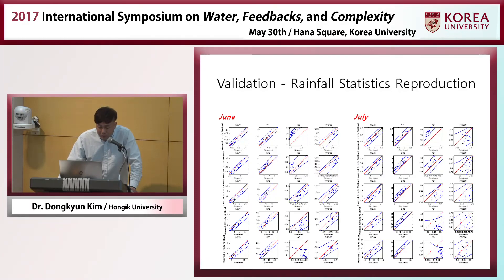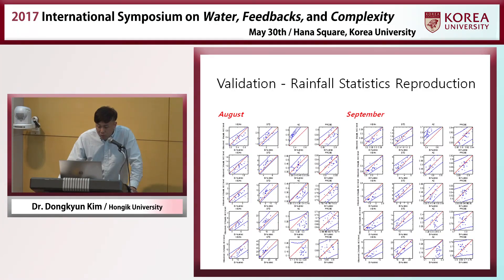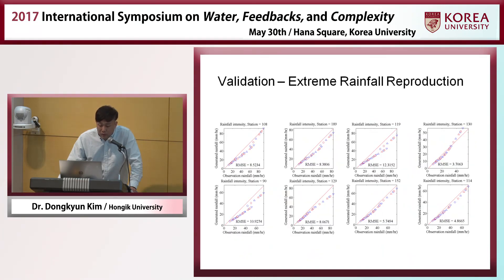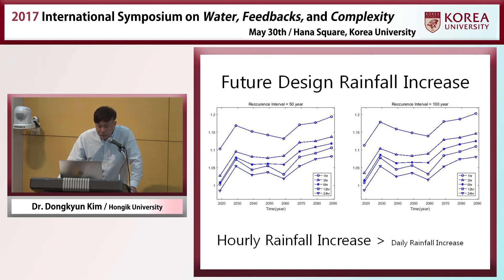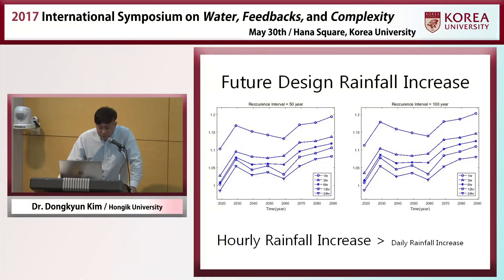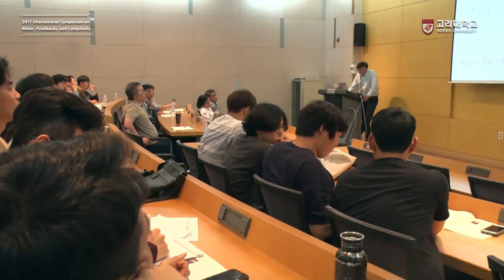This is the comparison of rainfall statistics for the Korean peninsula. Mean, standard deviation, covariance, and probability of rainfall are all reasonably well reproduced for all months, and the extreme values are also well reproduced. One interesting result is that the hourly rainfall increase in the future is significantly larger than the daily rainfall increase.